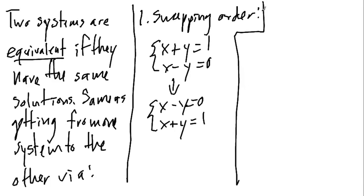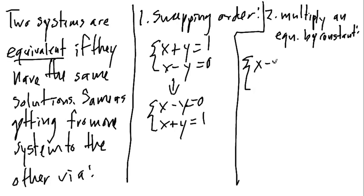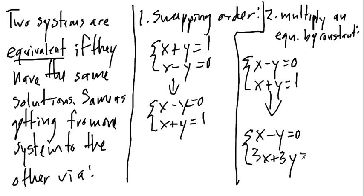So, for example, if I start with X minus Y is equal to 0 and X plus Y is equal to 1, I could multiply, say, the second equation by 3, and I get X minus Y equal to 0, and 3X plus 3Y is equal to 3. These are going to be equivalent, and since I got from here to here, and then here to here by these operations, this guy and this guy are also equivalent.